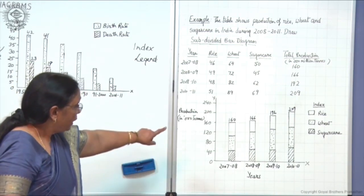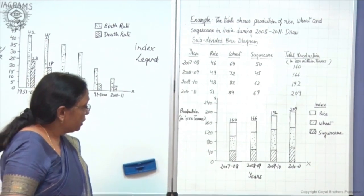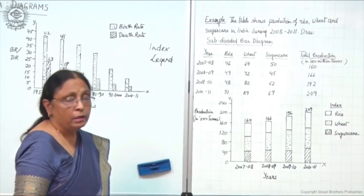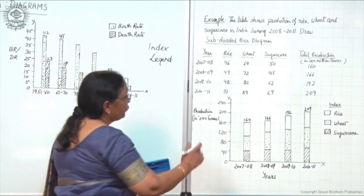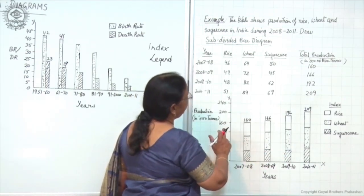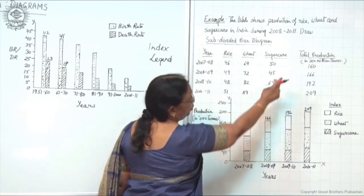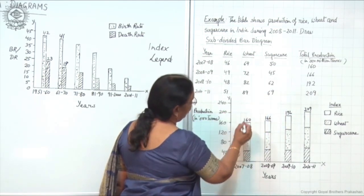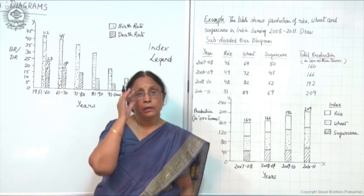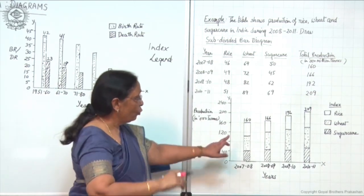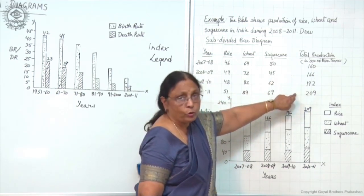At intervals of 40 we have taken six equal divisions on the Y-axis, and four bars on the X-axis — one for each year. Now what do you have to do in the subdivided bar diagram? First, for 2007-08, the total production is 160. Make a bar to the length of 160. Total four bars are made according to the data — this is the total length.